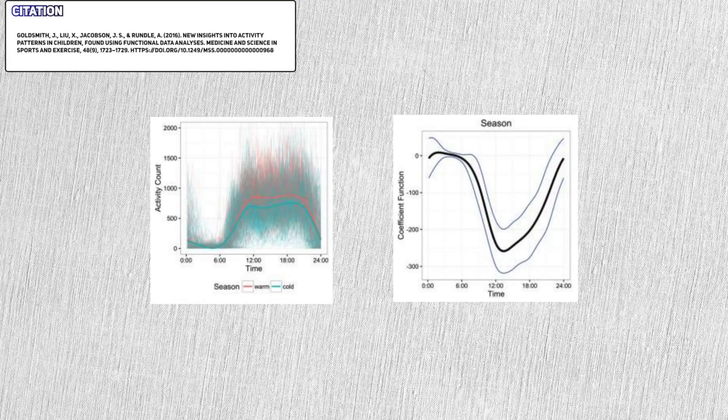In the raw data, you can see that cold seasons produce an average activity profile with slightly less activity from noon to 6pm. When we look at the associated coefficient function with colder seasons, we can see a drop around that time, and the magnitude of this drop roughly matches what we see in the data.